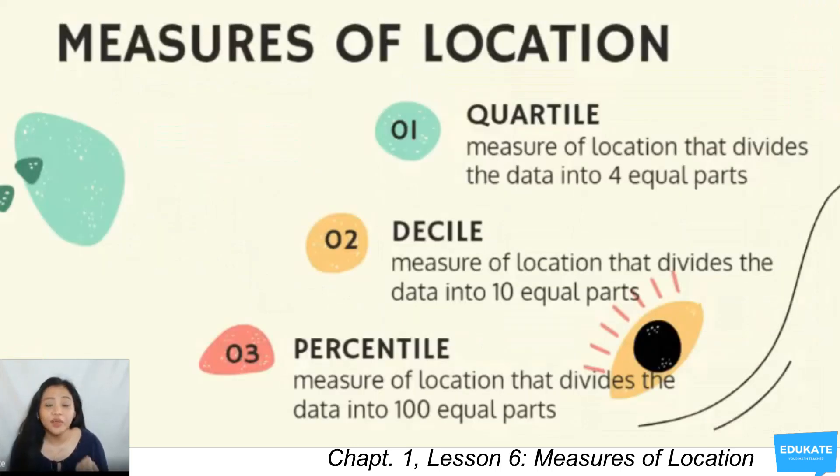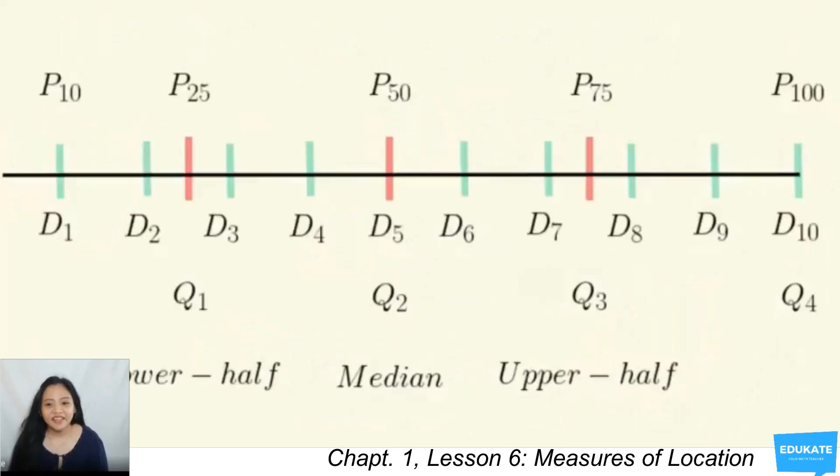Recalling, we have the three measures of location: quartile, decile, and percentile. It can be observed as follows. Quartile 1 is the median of the lower half. Quartile 3, the median of the upper half. Quartile 2 is the median of the data set, which is also decile 5 and percentile 50.